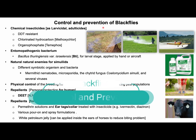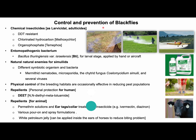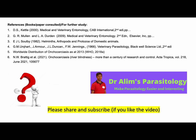Control and prevention of black flies is mostly targeted at the larval stages because they are concentrated in easily identifiable and specific habitats. Different chemical insecticides have been used for more than a century; nowadays, chlorinated hydrocarbons and organophosphorus compounds are used in managing black flies. Entomopathogenic bacteria such as BTI (Bacillus thuringiensis israelensis) are used for controlling black flies worldwide. Different symbiotic organisms and bacteria can also be used. Destruction of breeding habitats is occasionally effective in reducing pest populations. Repellents can also be used for human and animal populations.